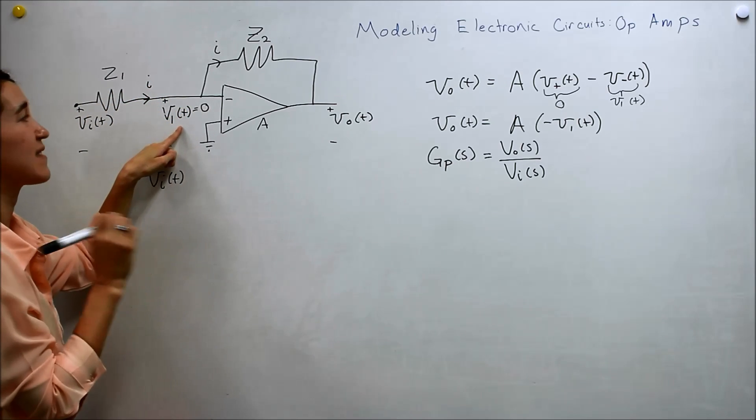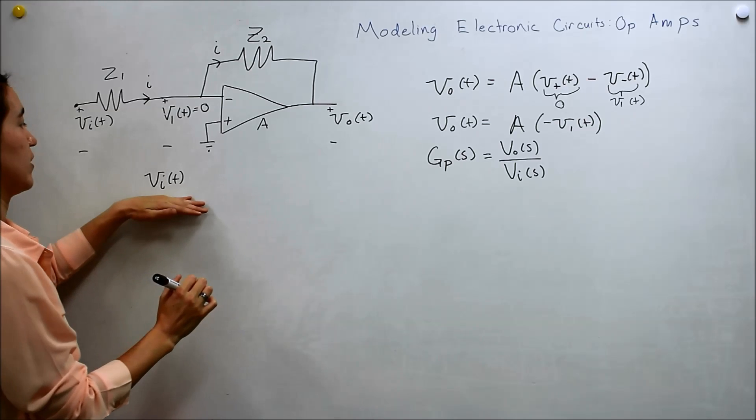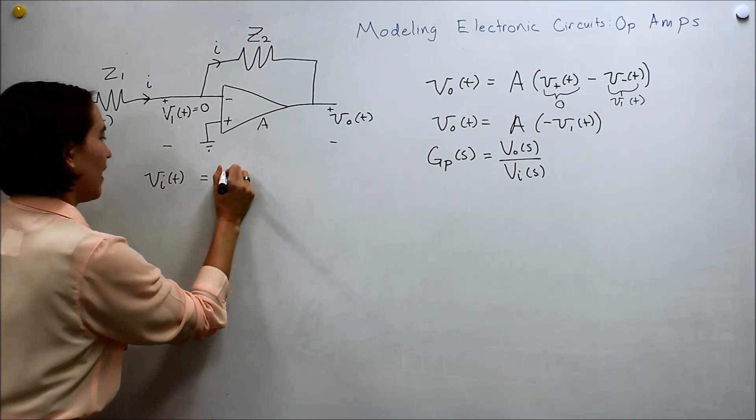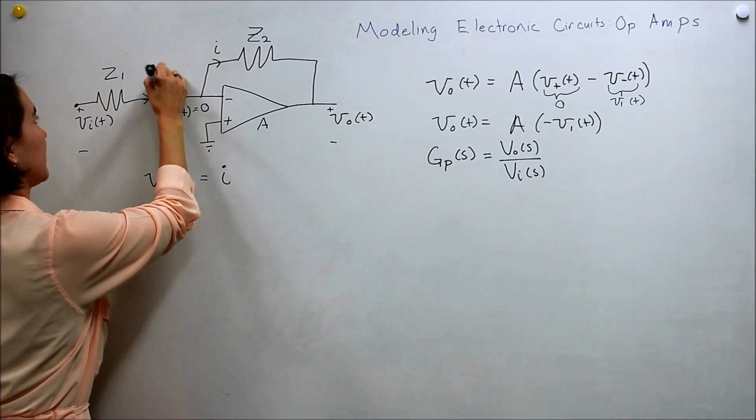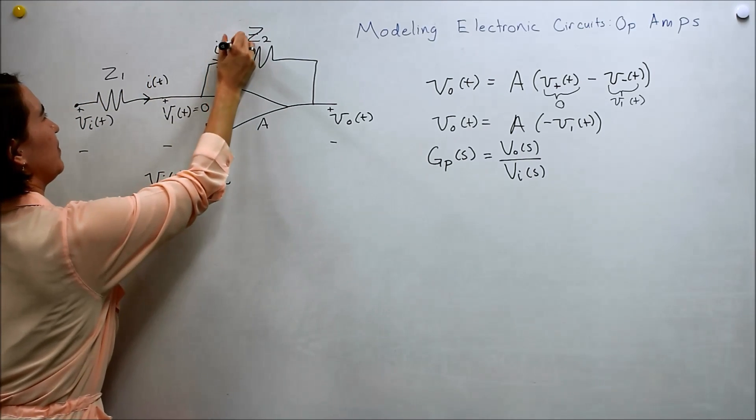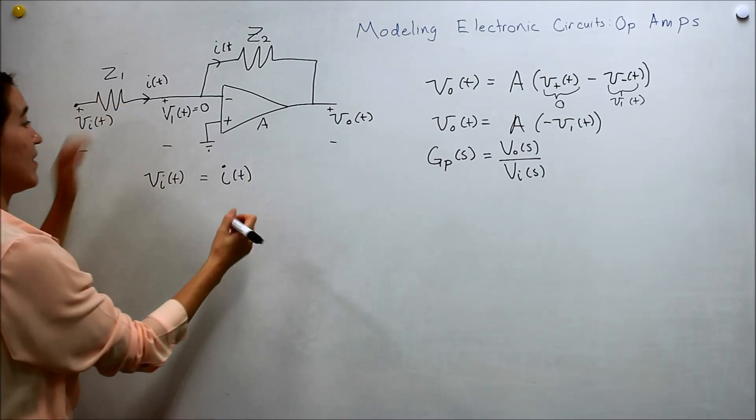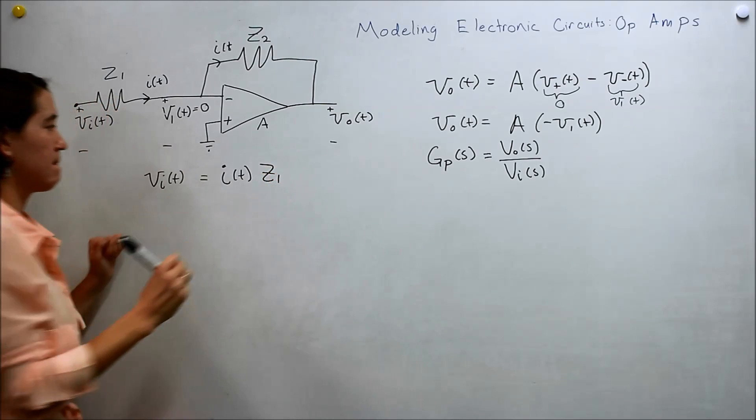V1, but we know that's zero. So we just leave it as V1. Sorry, VI equals I here. These are all of T. I should be exact. Times Z1. This is our impedance. Okay? Great.